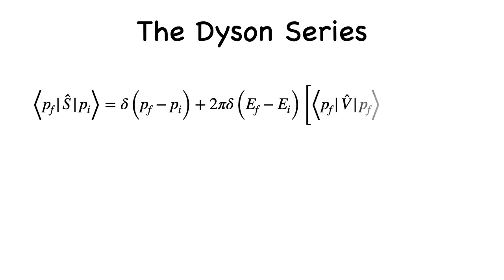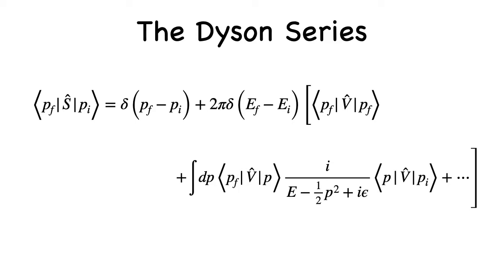And Dyson taught us that we can obtain this quantity in perturbation theory through the following series. So, the leading-order contribution is just the matrix elements of the potential, provided energy is conserved. Note that if the potential were zero, if our particles were free, then the initial and final asymptotic states are identical. That just means that these particles fly right through each other. And we have a first- or second-order contribution coming from the following momentum integral.